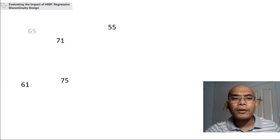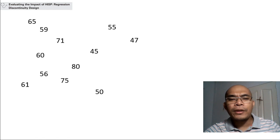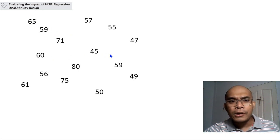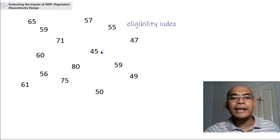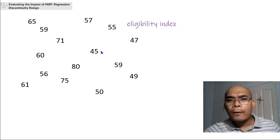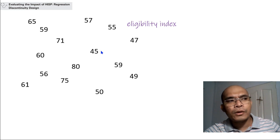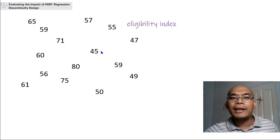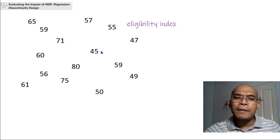For example, in evaluating the impact of HISP, we have poverty index values for our respondents in a particular area. These values for each respondent are what we call the eligibility index. Another example of an eligibility index is a scholarship grant where you need grades of 90 or above in order to qualify — those grades serve as the eligibility index.